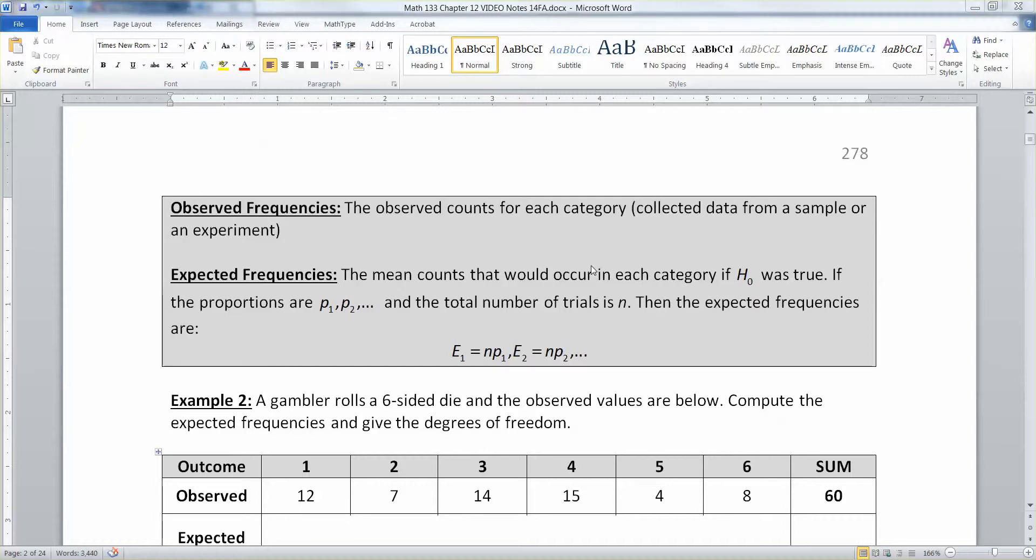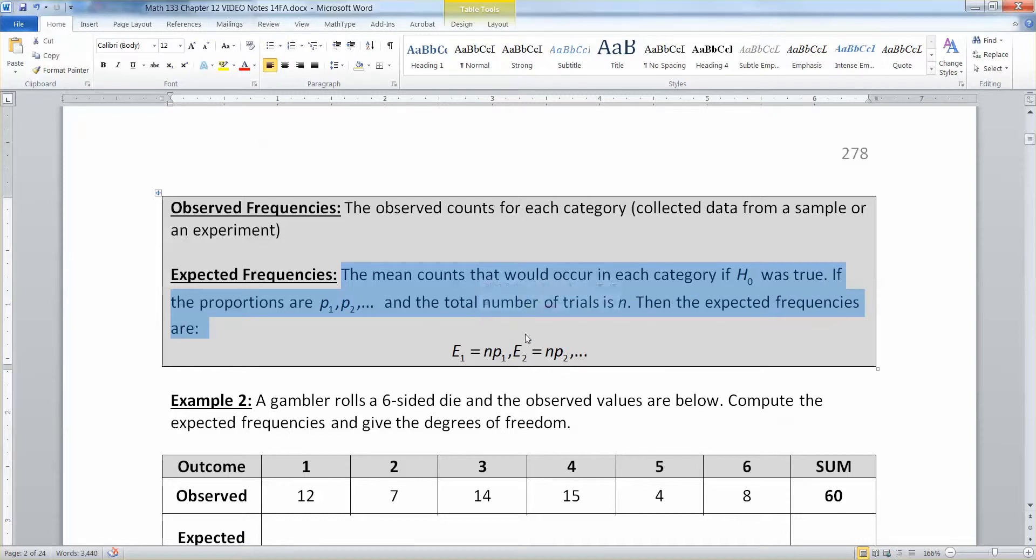The expected frequencies would be the counts that you expect from your null hypothesis. If your null hypothesis is true and the proportions are like you expect, then you should have certain numbers for each of the categories. And then the observed is what you actually got in each of the categories when you did a sample or an experiment.